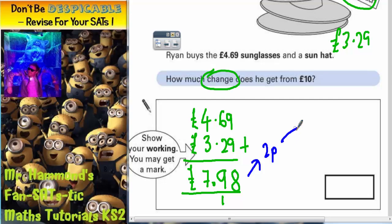And then if we add on an extra two pounds that will get us to ten pounds. So he's actually going to end up with two pounds and two pence change. That's the final answer, two pounds and two pence. All I've done there is counted up from seven pound ninety-eight up to ten pounds. Two pence makes it up to eight pounds and then an extra two pounds makes it up to ten pounds.